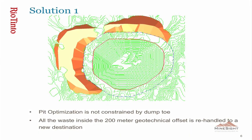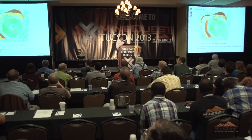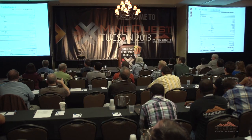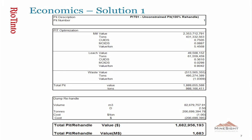Solution one: we go up to the full pit limit and re-handle all the material inside the 200-meter geotechnical offset, mining all the reserves. The economics are: mill value $2.3 billion, leach value $49 million, waste cost $500 million, and the re-handle associated with this pit optimization is $207 million, assuming a $1 unit cost for re-handle. The total value of this project is $1.7 billion.